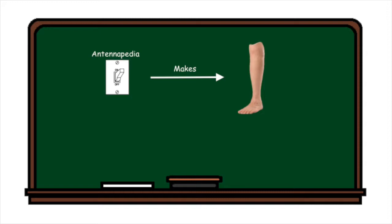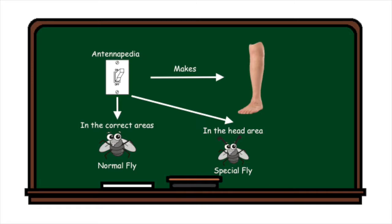Antennapedia is a Hox gene that controls the growth of legs. If Antennapedia is turned on or expressed, legs will grow. It is normally expressed on the fly's side or thorax. If the Antennapedia gene is turned on in the region of the fly's head where the antenna grow, legs will grow instead.